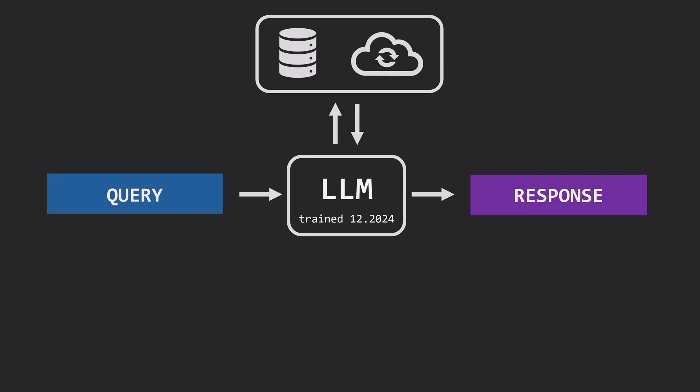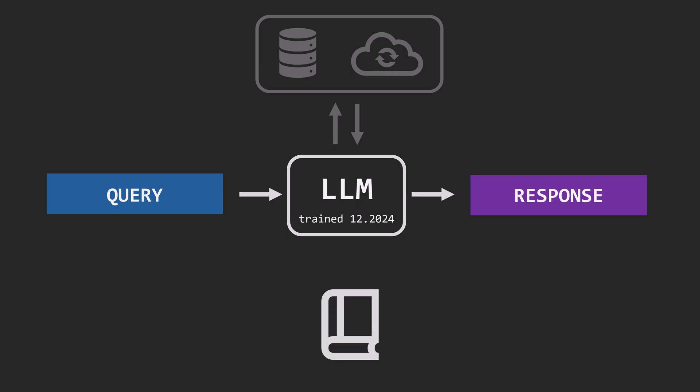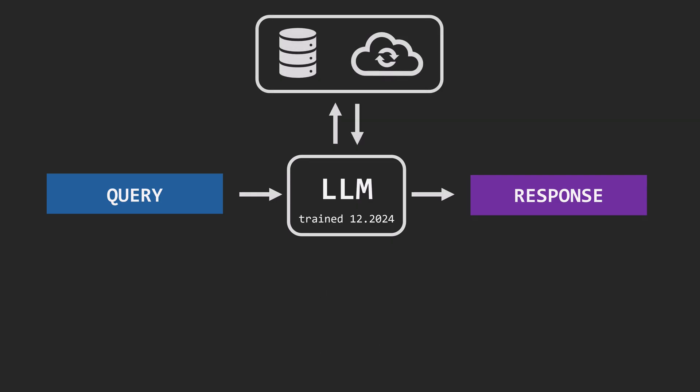In natural language processing, we call the first approach a closed book, where the model must rely entirely on what it learned during training. The second approach, where the model can access external information, is known as open book — like taking an exam with full access to your notes and other materials.